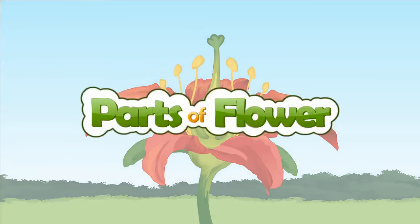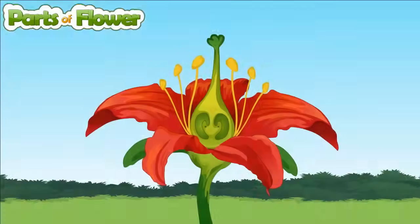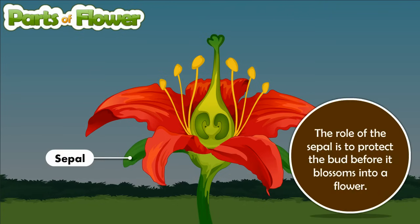Parts of Flower. In flowering plants, reproduction occurs in the flowers. There are several important parts in a flower that help in fertilization. The role of the sepal is to protect the bud before it blossoms into a flower.